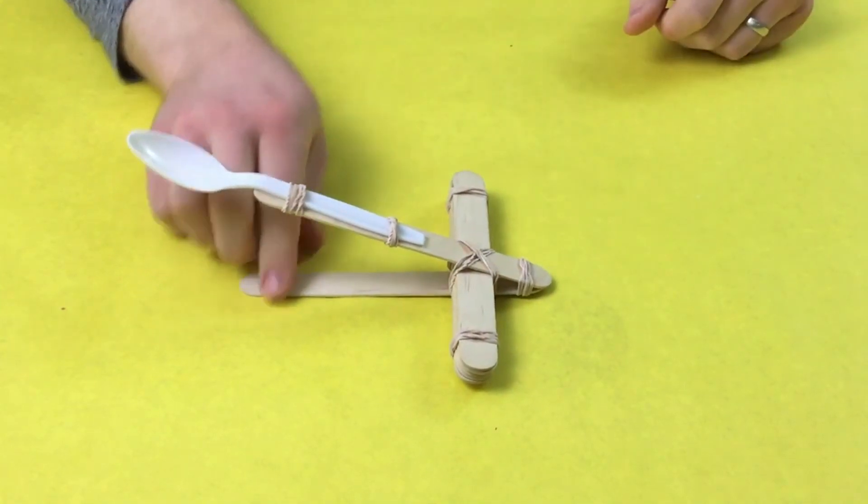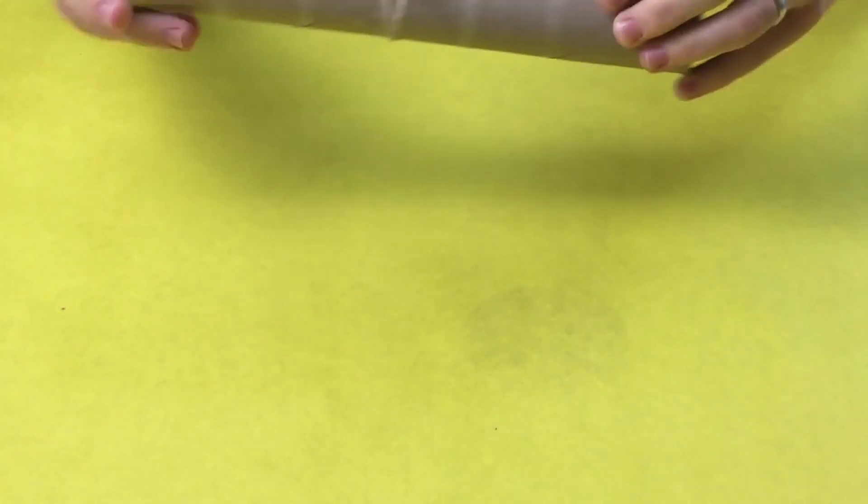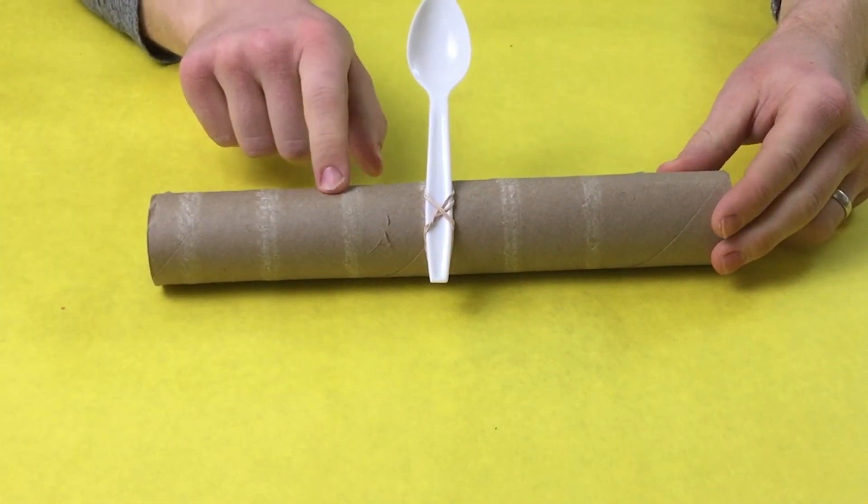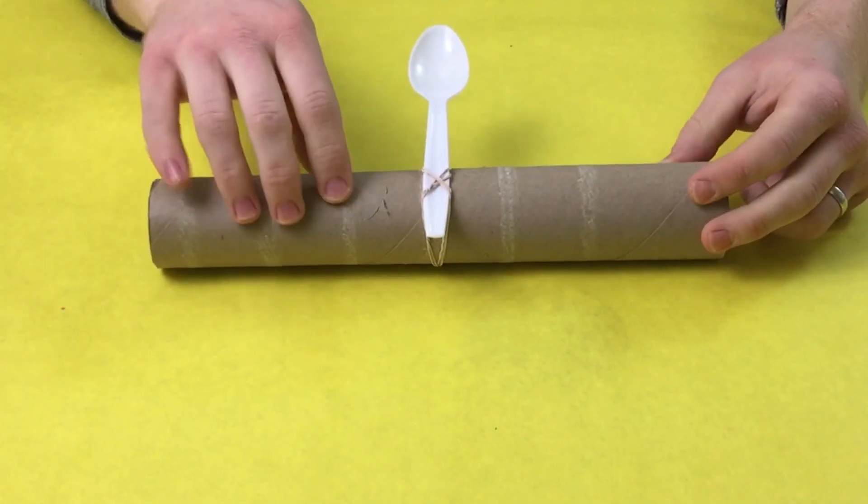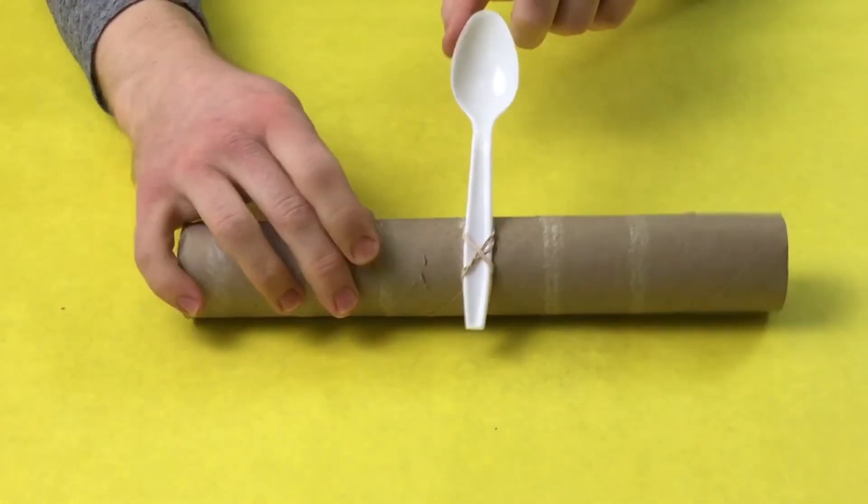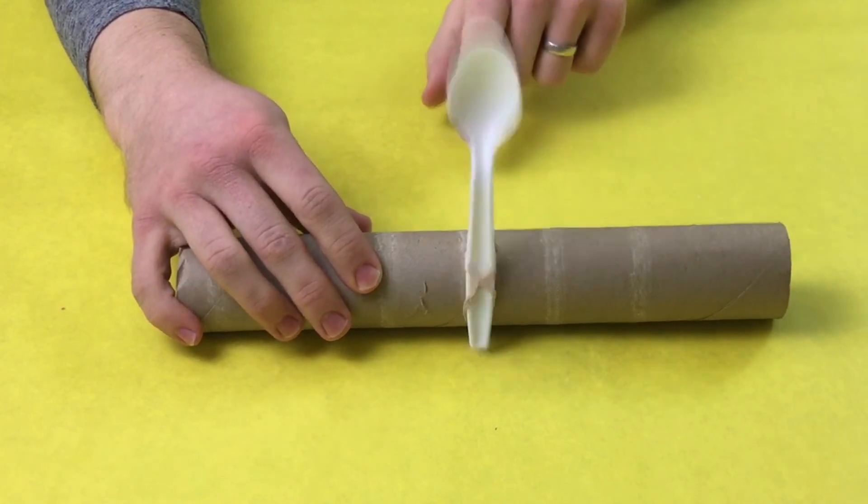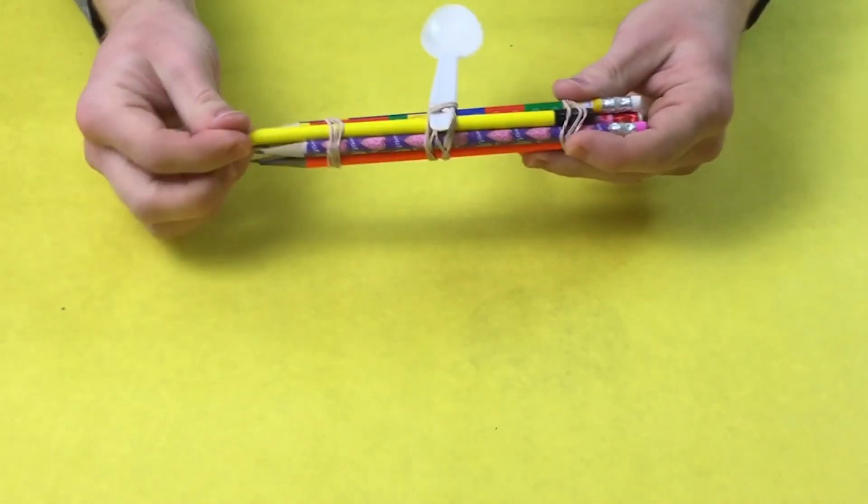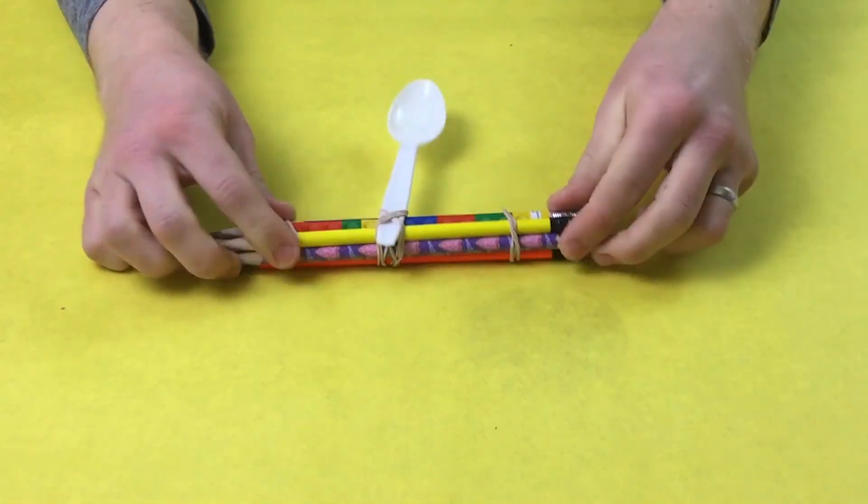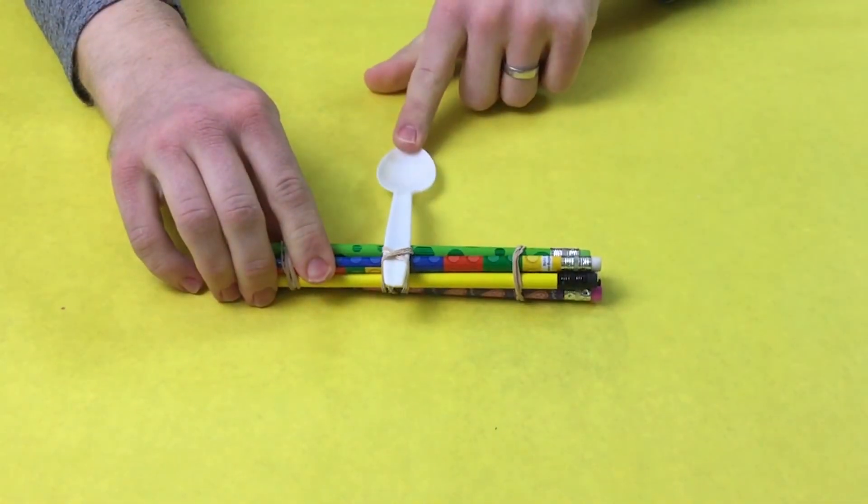Now if you don't happen to have any craft sticks at home, you can do this project in other ways. One way that I also did it was with a tube from a paper towel roll, and then I just did two rubber bands to cross that on there and this works as well. You can do it with pencils forming your base, which I rubber banded together, and then you put your spoon on like that.